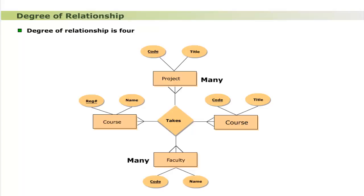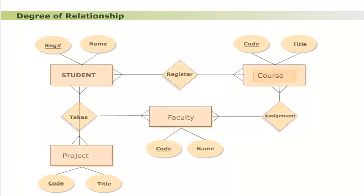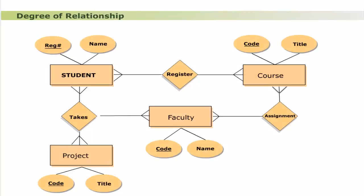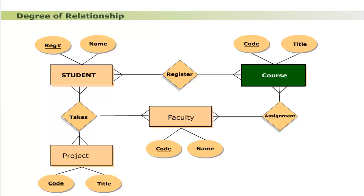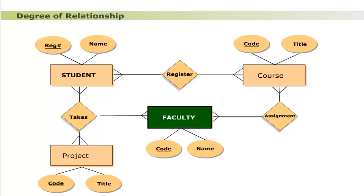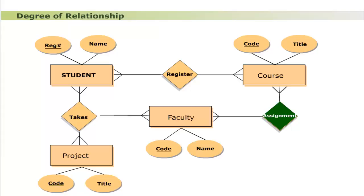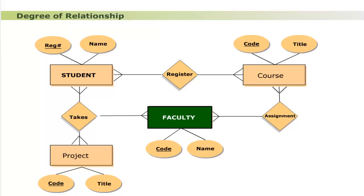A single relationship of degree four is sometimes difficult to name, and it shows a direct relationship between entity classes project and course which does not actually exist. The relationship 'takes' may be decomposed: 'takes' connects Student with Course (many students register many courses); another 'takes' connects Student, Project, and Faculty (many students register many projects supervised by faculty); and 'assignment' connects Course with Faculty (many courses are assigned to many faculty members).